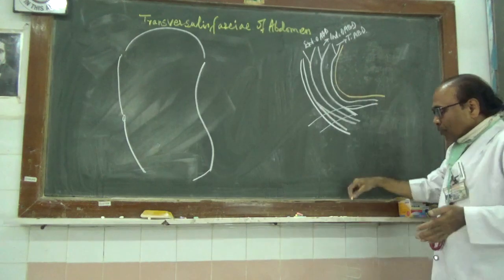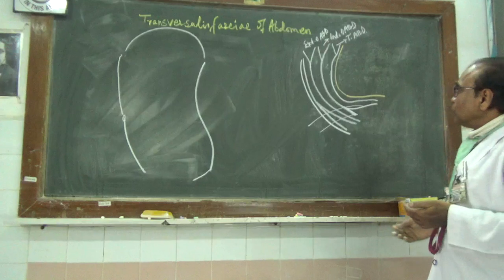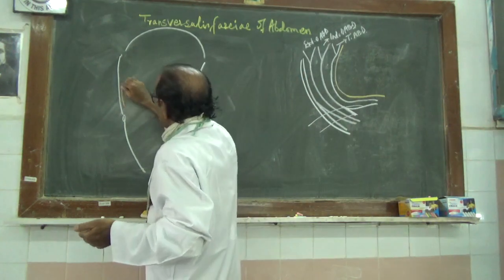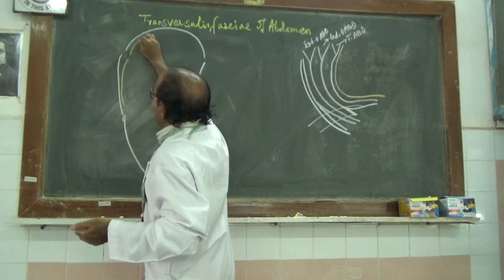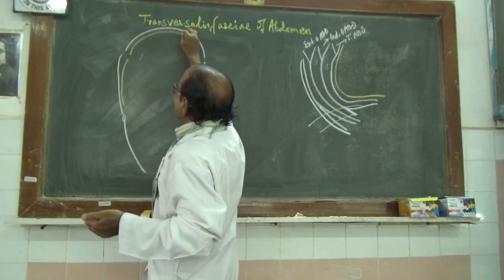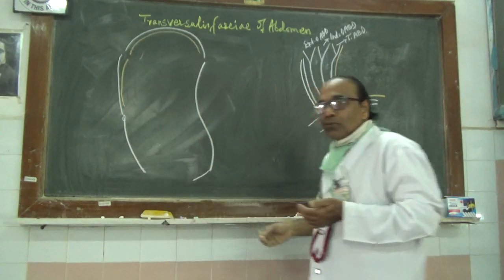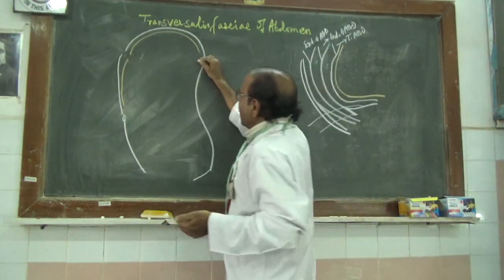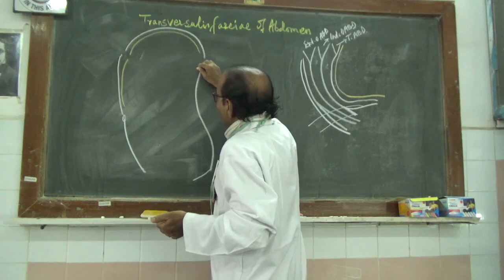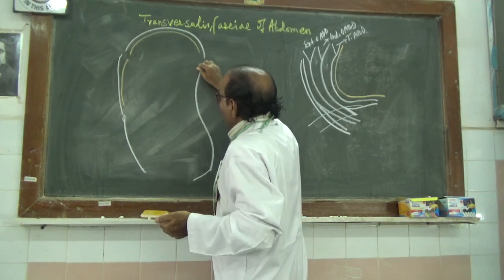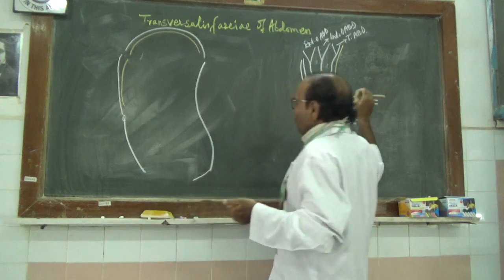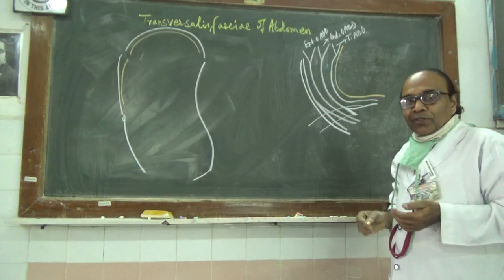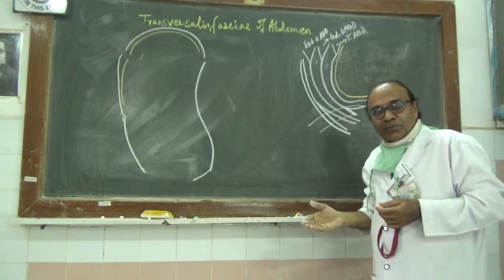This is the transversalis fascia. It will be present here, it will be there at the left, covering the surface of the right and left dome of the diaphragms. Then it covers the anterior aspect of the posterior abdominal wall, and it is attached to the transverse processes of the lumbar vertebrae.